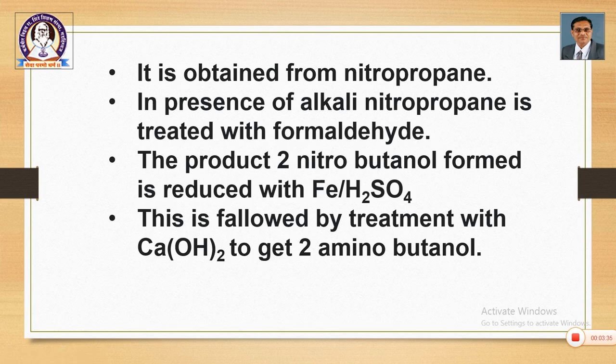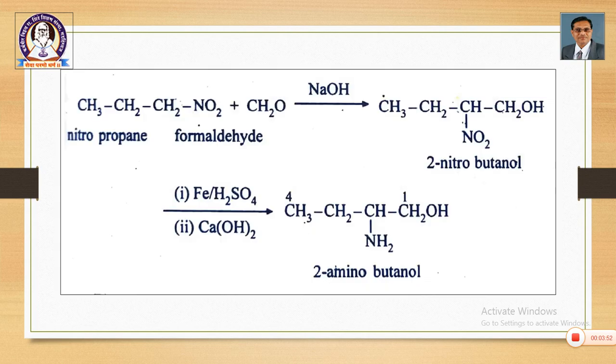The product obtained is 2-nitrobutanol. This is then reduced to the next product, 2-aminobutanol, using Fe and H₂SO₄, followed by treatment with calcium hydroxide to get 2-aminobutanol.